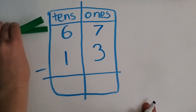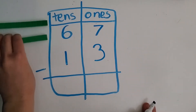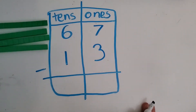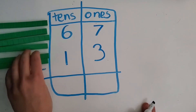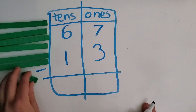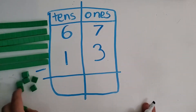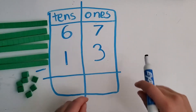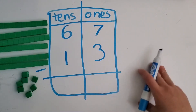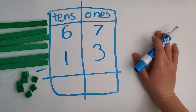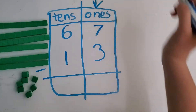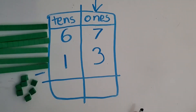For 67, we need six ten rods and seven ones. One, two, three, four, five, six, seven ones. And one, two, three, four, five, six tens. So what do we subtract first? The ones — that's where we start, that's what we subtract first.